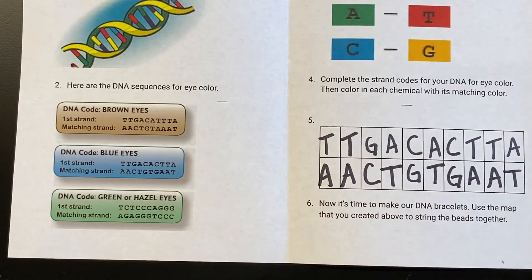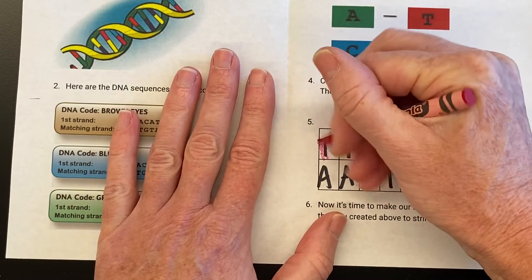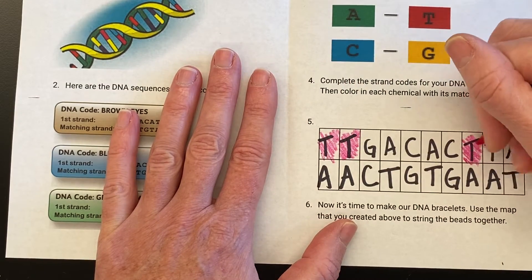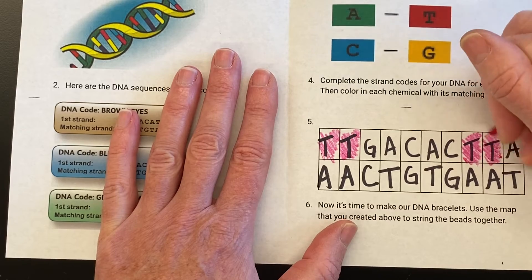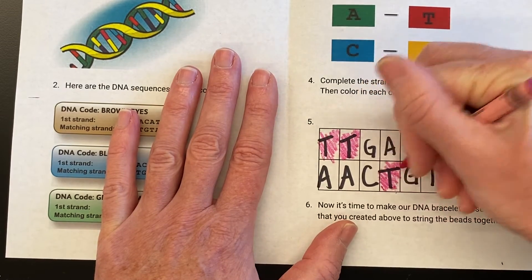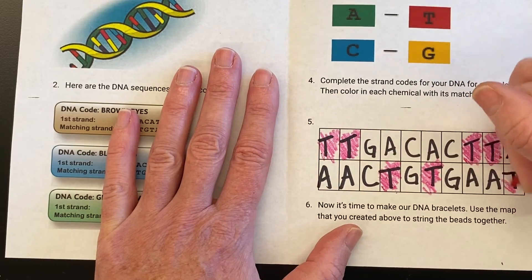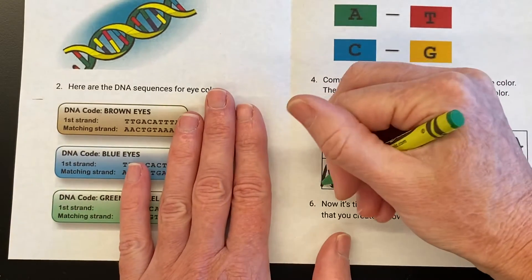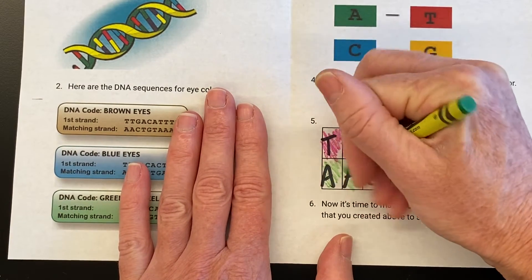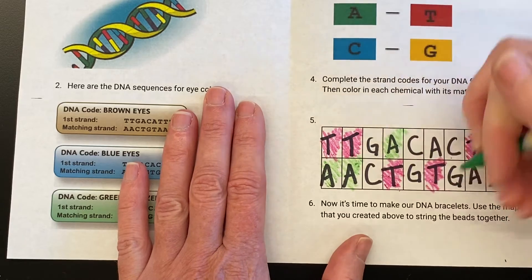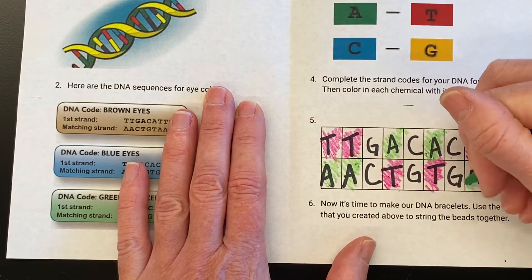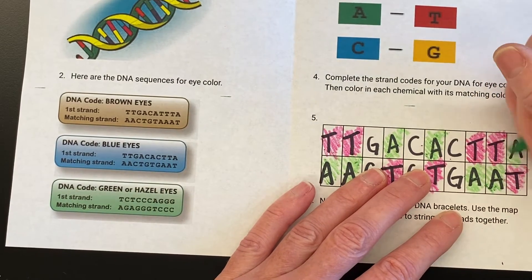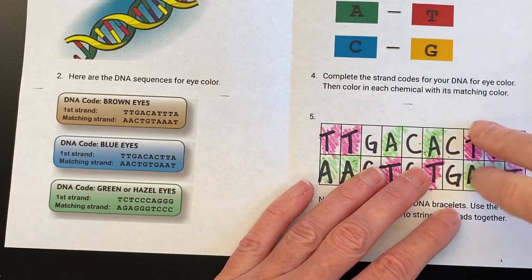Now that I have written down the pattern, I'm going to color code it. T is red, so I'm going to color all my T's in red. A is green, so all those matching pairs with A are green. This is also a way I can check my work — A and T match each other, so if those pairs don't line up, I know I've done something wrong.